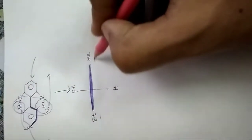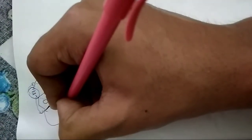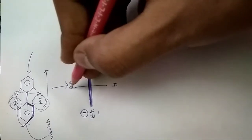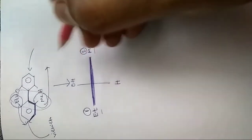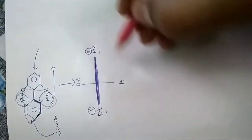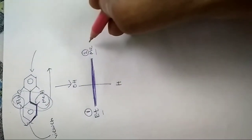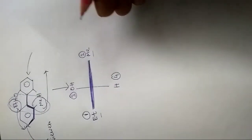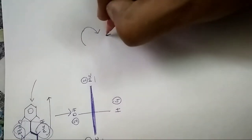The Et and Me groups are attached to the direction from which we are viewing the molecule. We have to assign these two ligands first, then the other two. Between Et and Me, Et gets higher priority than Me. Then between OH and H, OH gets third preference and H gets fourth preference.